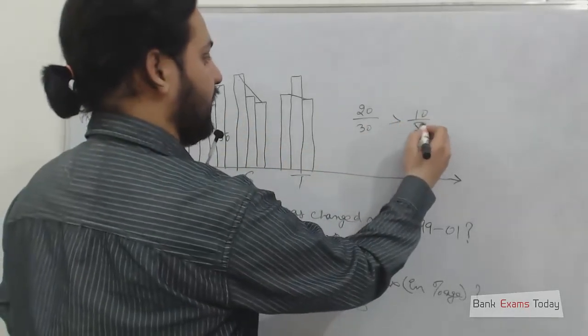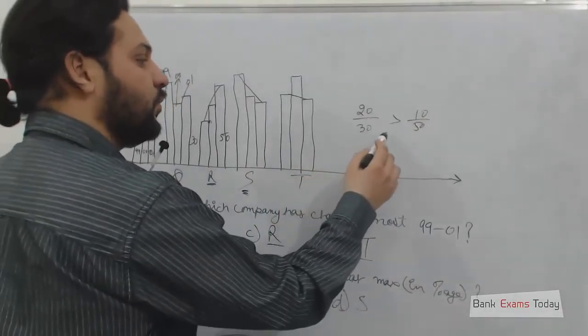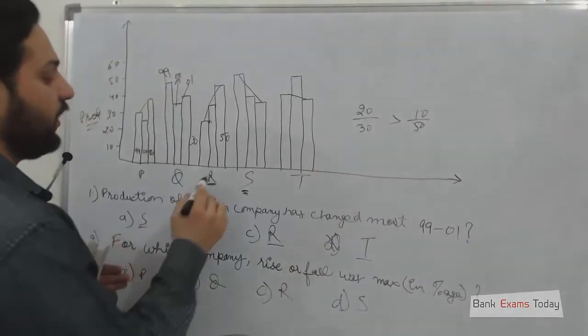10 over 50. If we convert it into percentages, 20 over 30 is always more than 10 over 50. So the answer should be R.